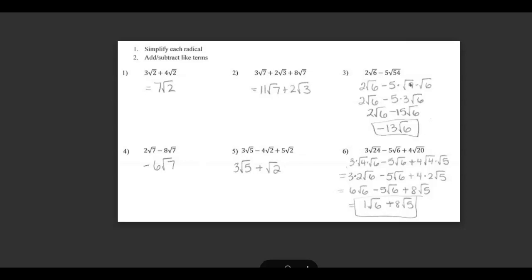As a refresher, in problem number one, you could add the 3 and the 4 to get 7, so you get 7 square root of 2. You do not add the numbers underneath the radical. In problem number two, you can put together the 3 root 7 and the 8 root 7 to make 11 root 7, but you cannot put it together with the 2 square root of 3 because they are different radicals.